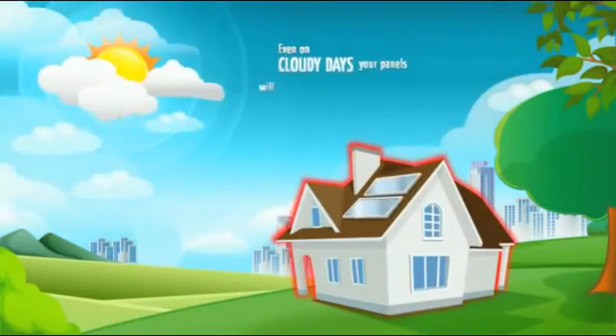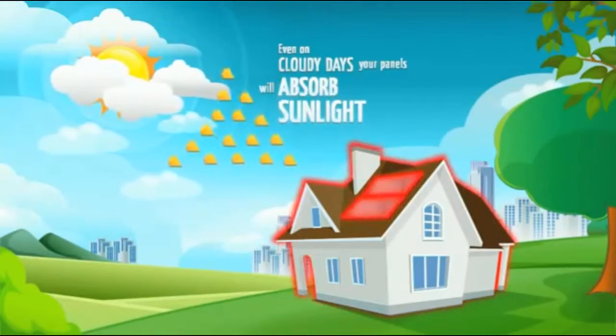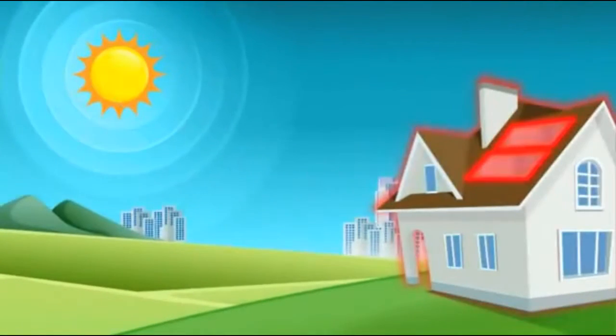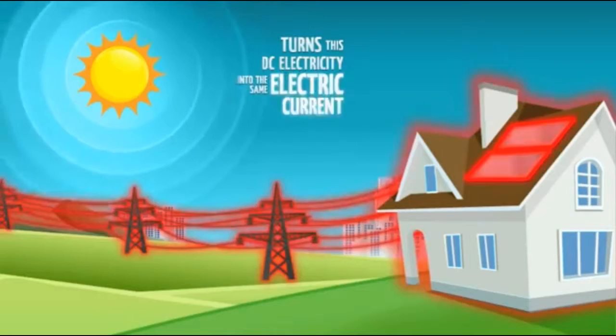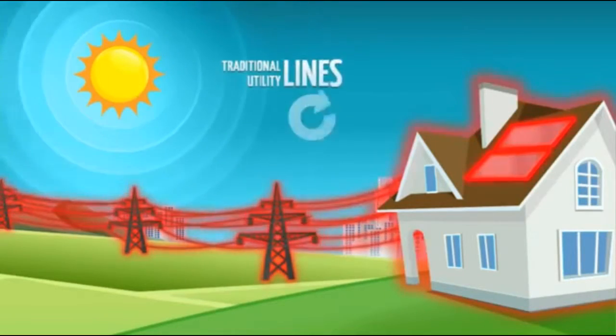Even on cloudy days your panels will absorb sunlight. The system's converter then turns this DC electricity into the same electric current that comes from your traditional utility lines.